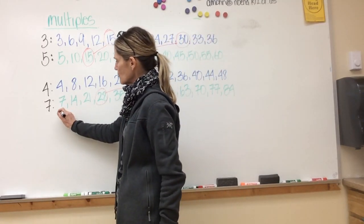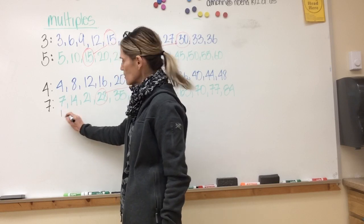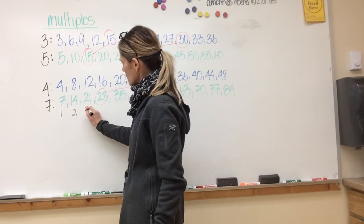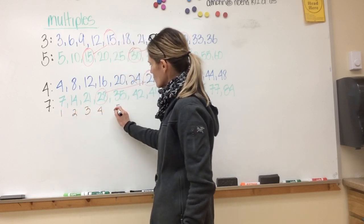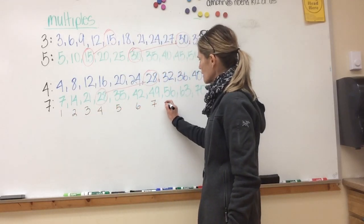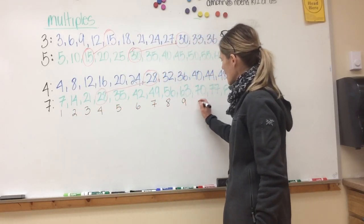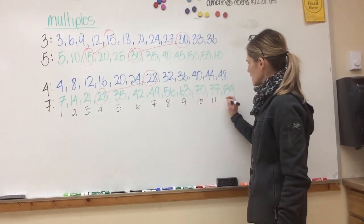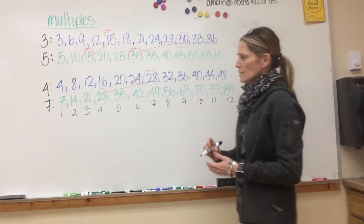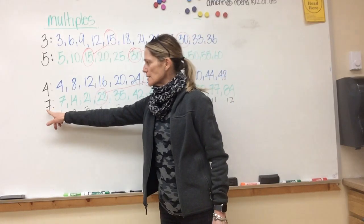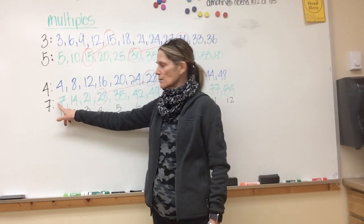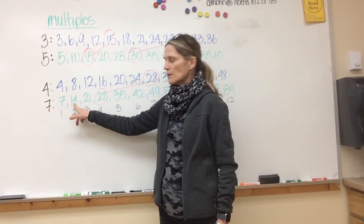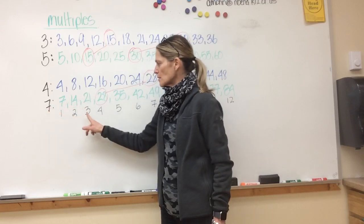Remember, if you want to know what the multiplication is, you just count them. So this is the first number, second, third, four, five, six, seven, eight, nine, ten, eleven, twelve. So I could tell myself seven times one is 7, seven times two is 14, seven times three is 21.